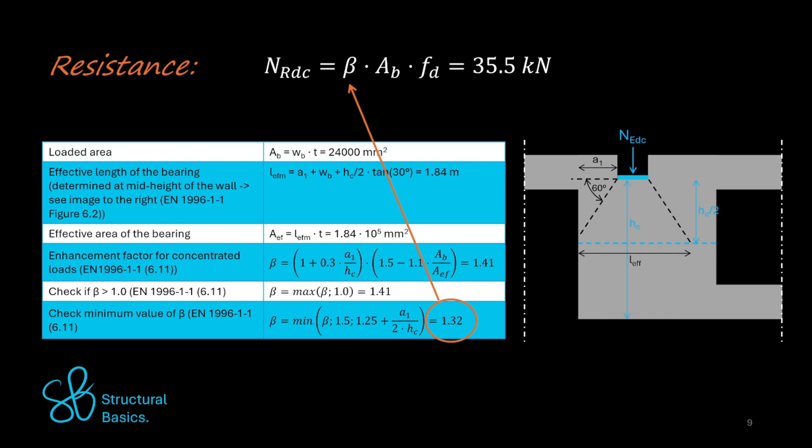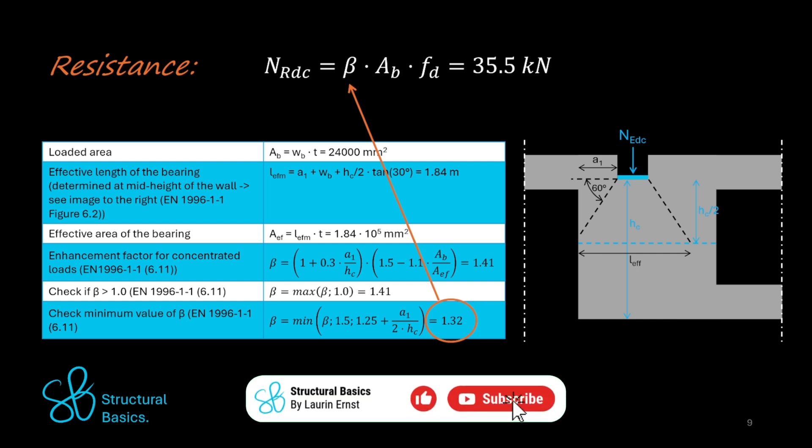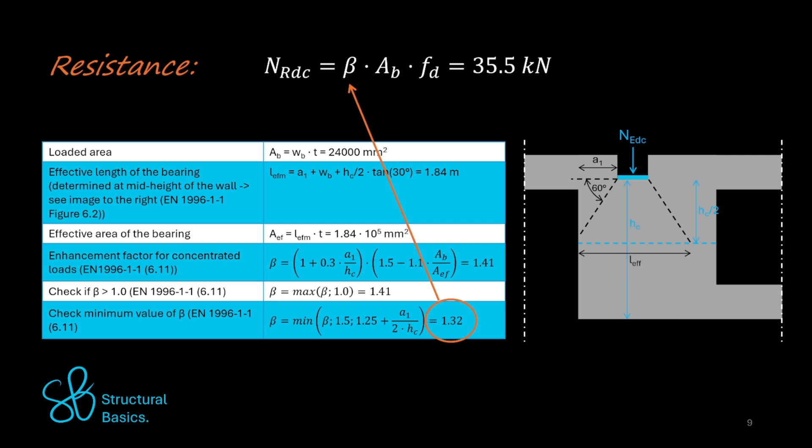We can see from this visualization here that the beta factor depends on the geometry of the wall and its placement to openings.